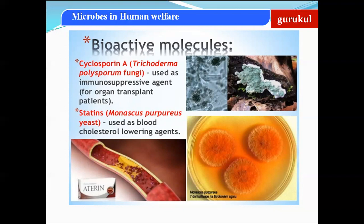Statins are obtained from the yeast Monascus purpureus. Statins are used as blood cholesterol-lowering agents — they lower cholesterol levels in the body. Trichoderma polysporum produces cyclosporin A, while Monascus purpureus produces statins — these are important bioactive molecules used in human welfare.